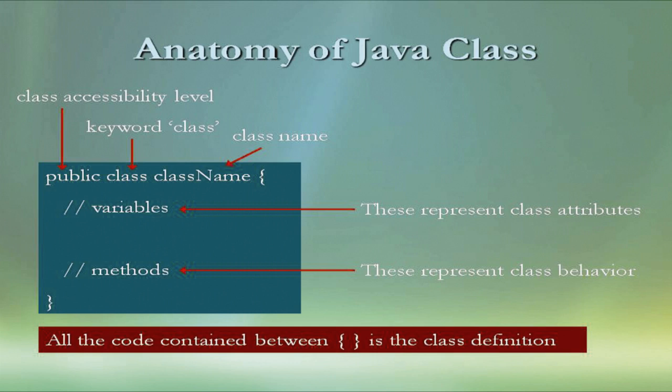In terms of programming, specifically in the Java language, you can write something like this: public, class and then class name. Class name is the name you give to the class such as human, animal, car. Then you start with a curly brace, opening curly brace and closing curly brace. Whatever you write in between is called class definition. Inside the class definition you write variables and methods. Variables represent attributes of the class. Methods represent the behavior of the class.